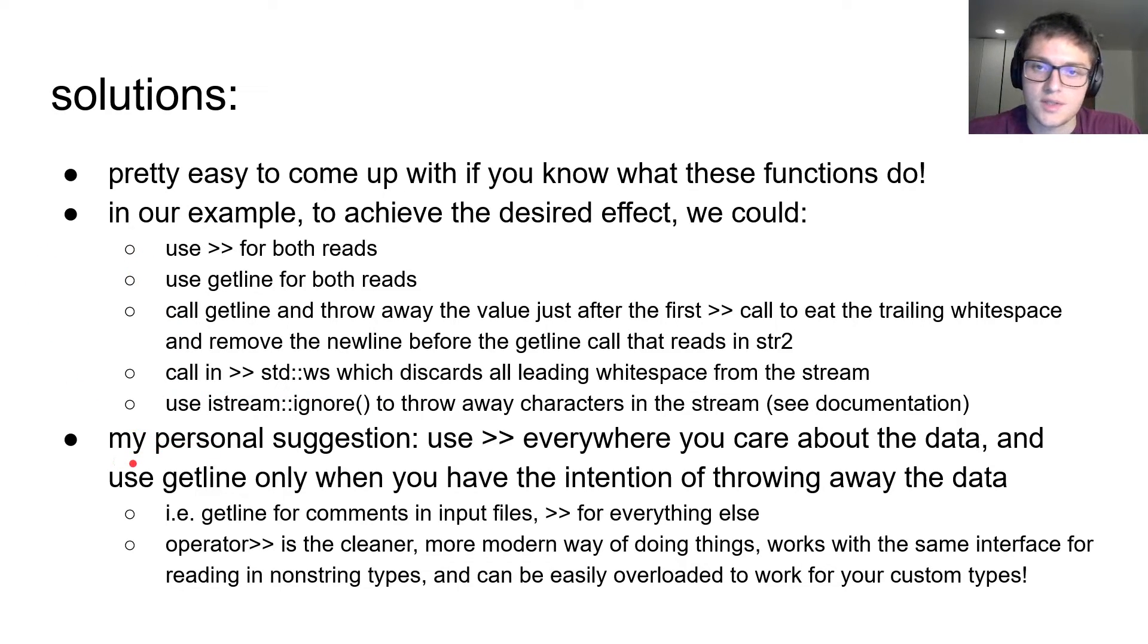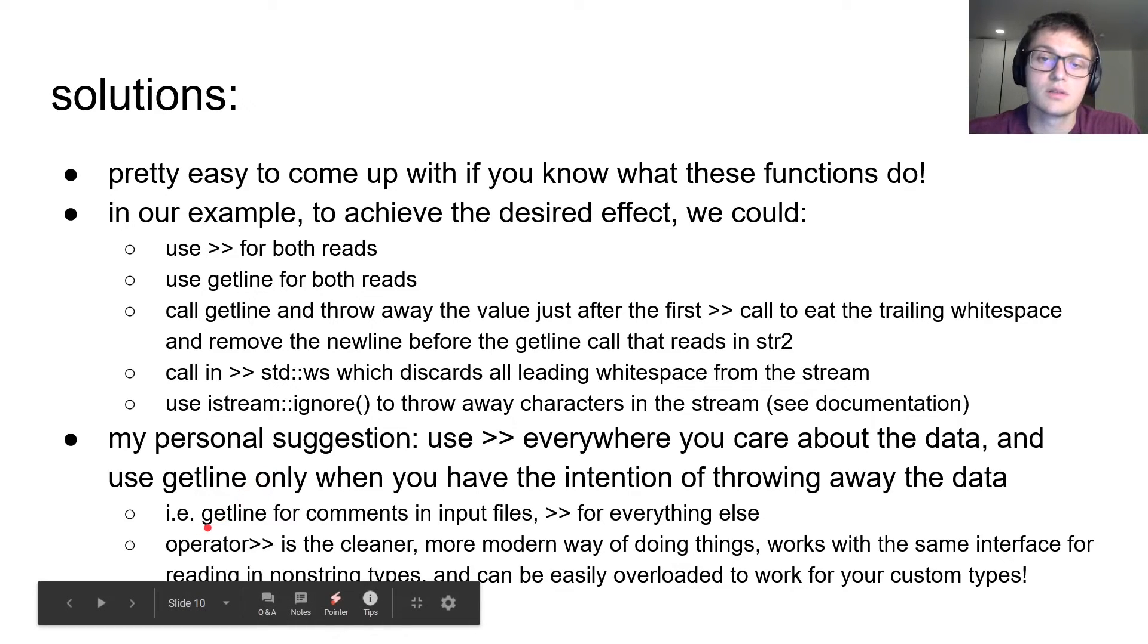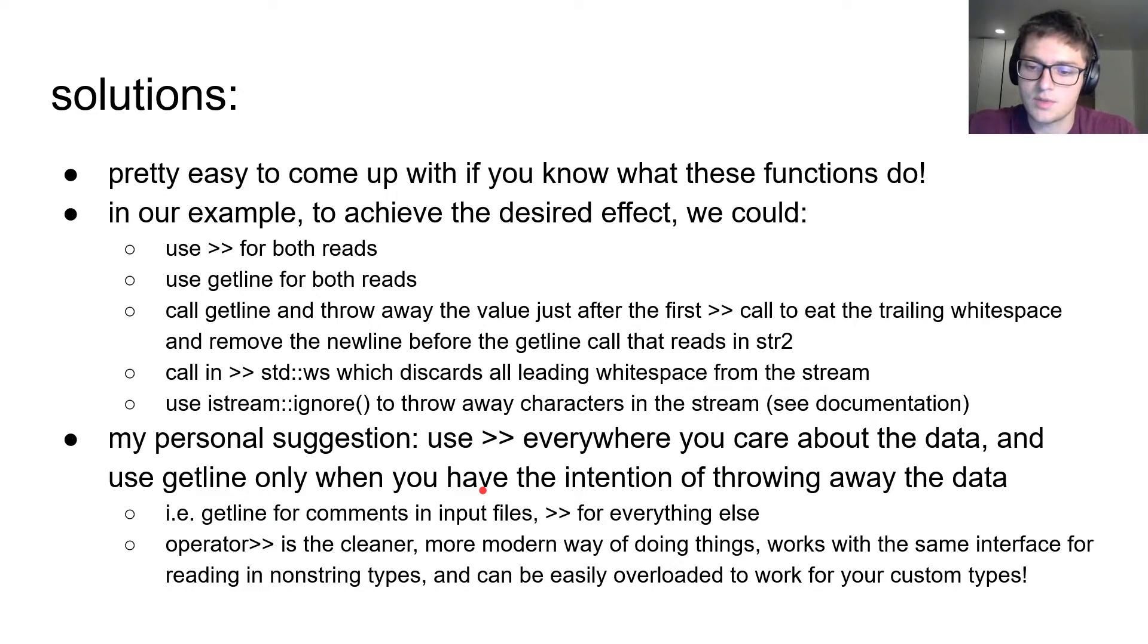And my personal suggestion, because I'm the one who wrote these slides, is that you should use the iStream extraction operator everywhere that you want to keep the data, and then use getline only when you have intention to throw away the data. And in EX281, we should use, in my opinion, getline only when you want to grab a comment and throw it away. And then use the extraction operator for everything else. And this is because I think the extraction operator is cleaner, more modern way of doing things. It has the same interface for reading in all kinds of types, and you can even overload it to work for your custom types.